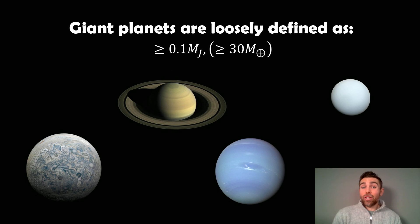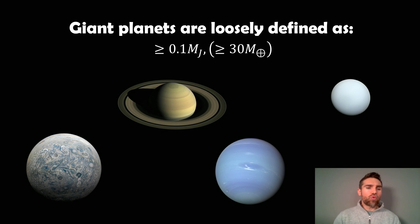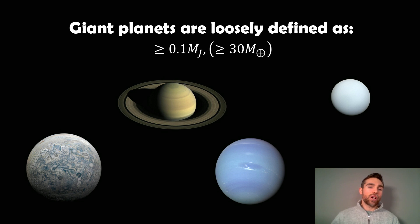Before we do that, let's just recap on what giant planets are. Giant planets are loosely defined as having a mass greater than 0.1 times the mass of Jupiter, or 30 times the mass of Earth. Using that criteria, we only really have Jupiter and Saturn in our own solar system. Neptune and Uranus are less than that but they're still big planets — they're ice giants sitting in a slightly different category to Jupiter and Saturn.